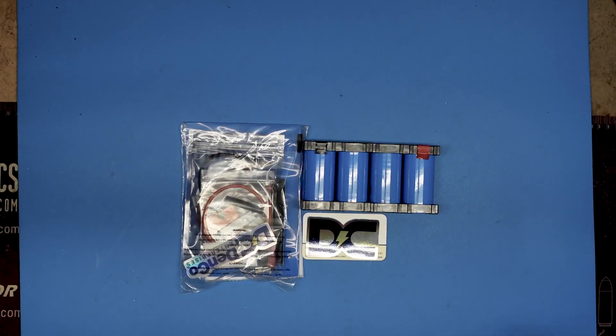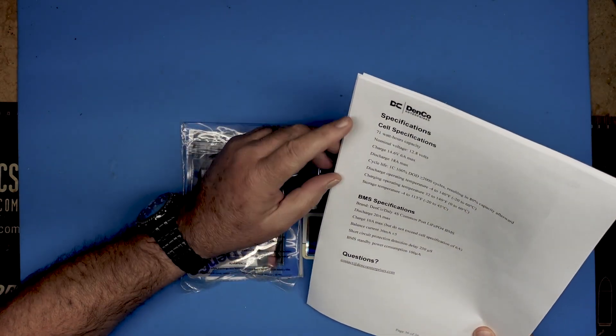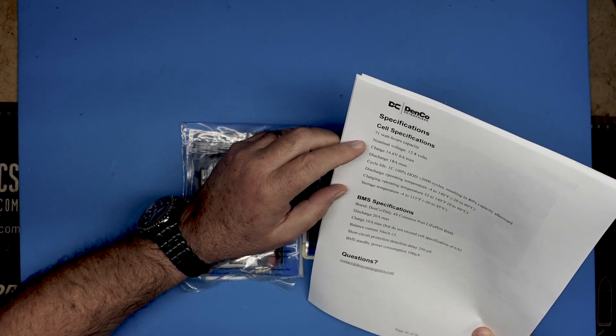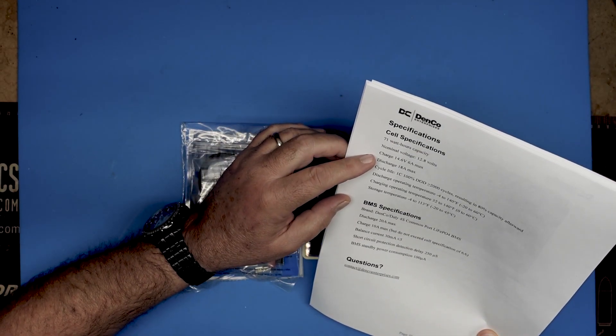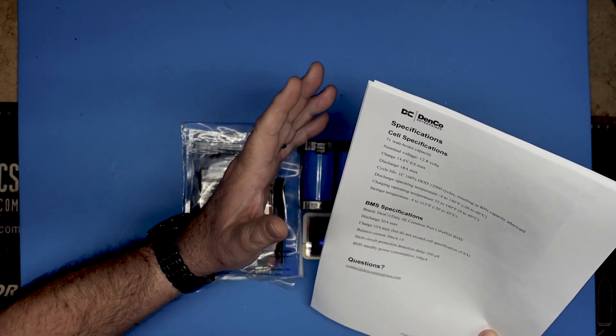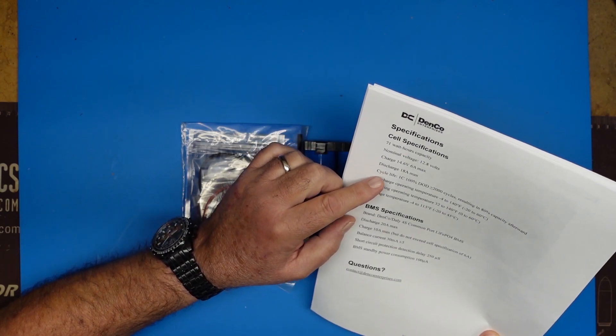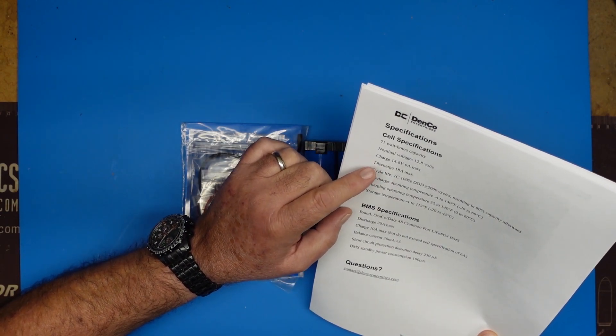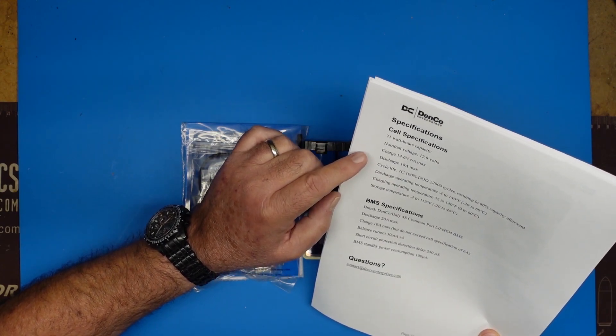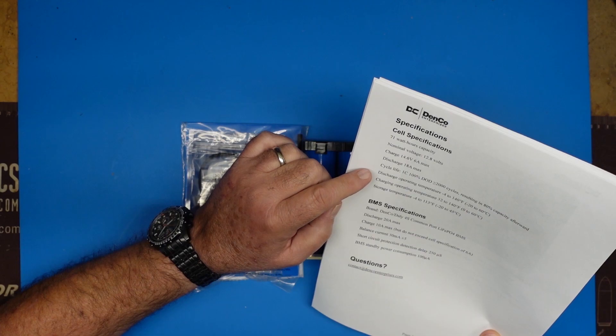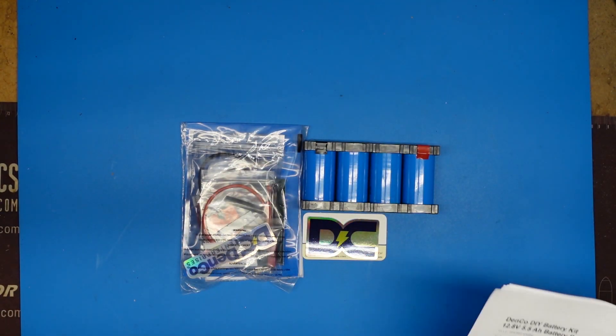Now, the specs on the battery kit are nice. This is not a huge battery. This is a 71-watt-hour capacity, 12.8-volt. This will charge at normally 14.6-volt, 6-amps max. It'll discharge up to 18-amps max, and of course it has a life cycle of around 2,000 charging cycles. This is a 5.5-amp-hour battery, so you're not going to run a full day of POTA with this.